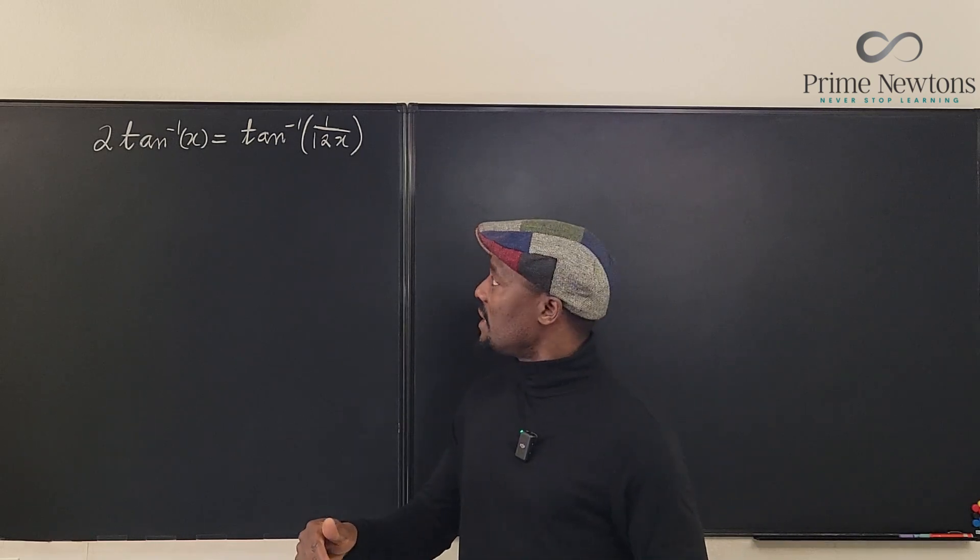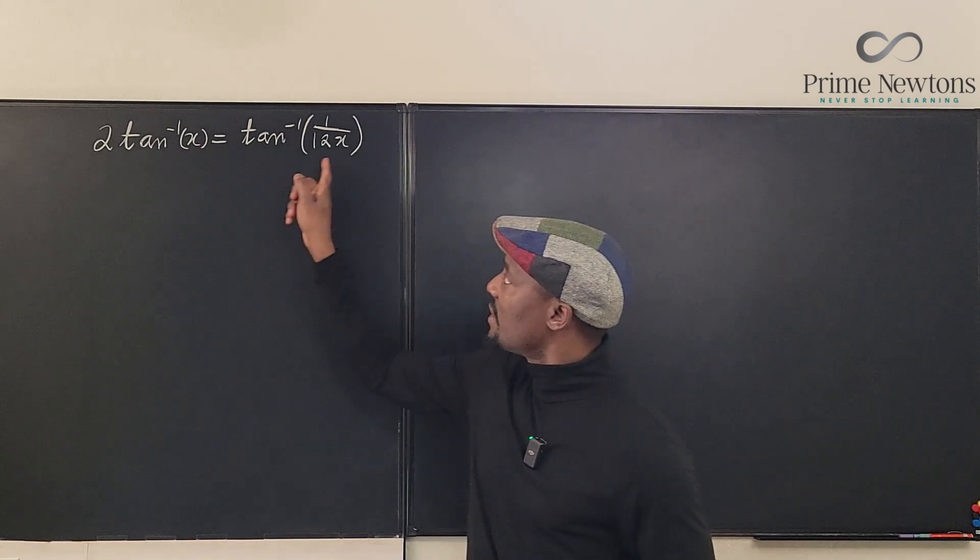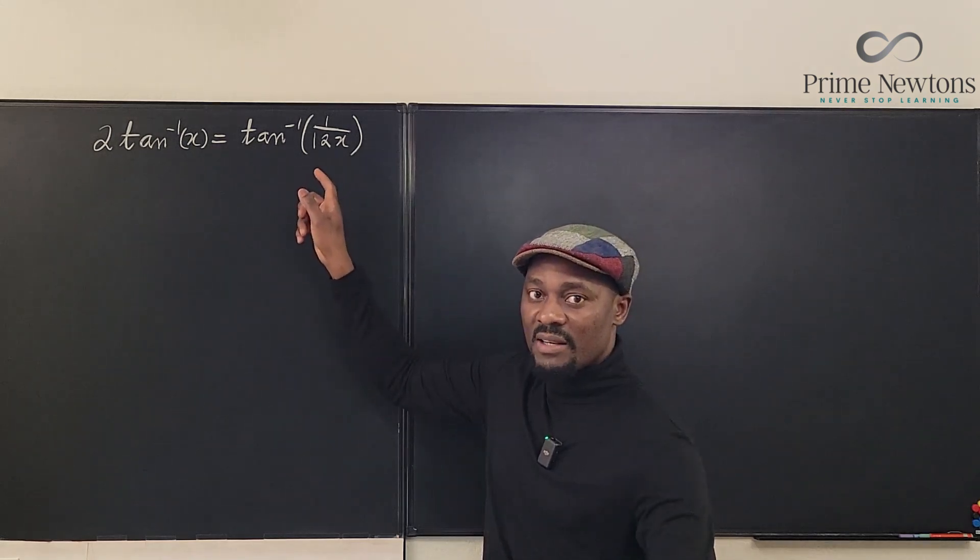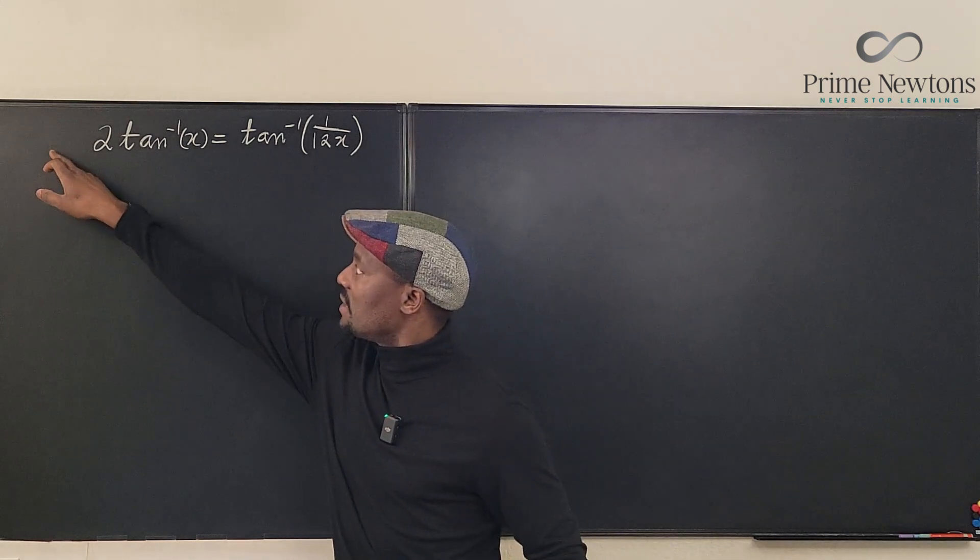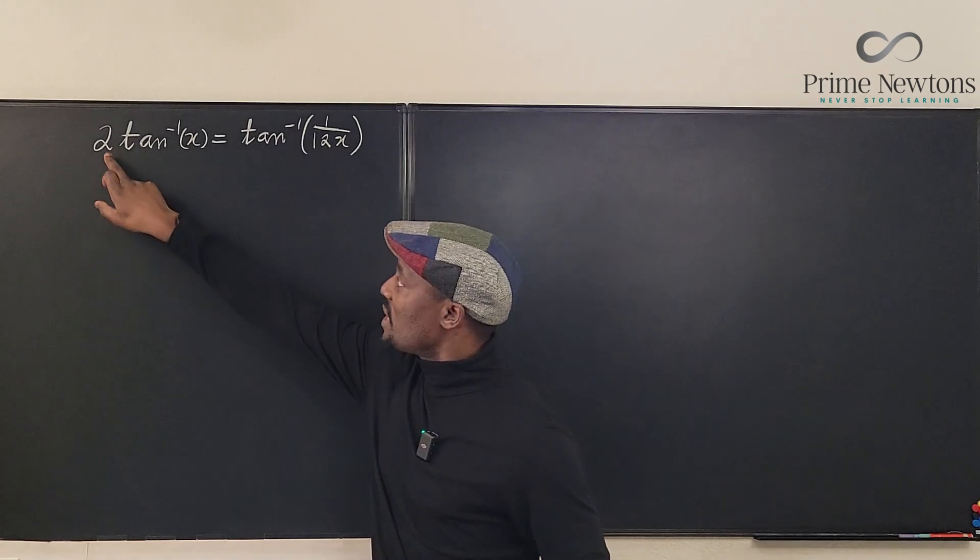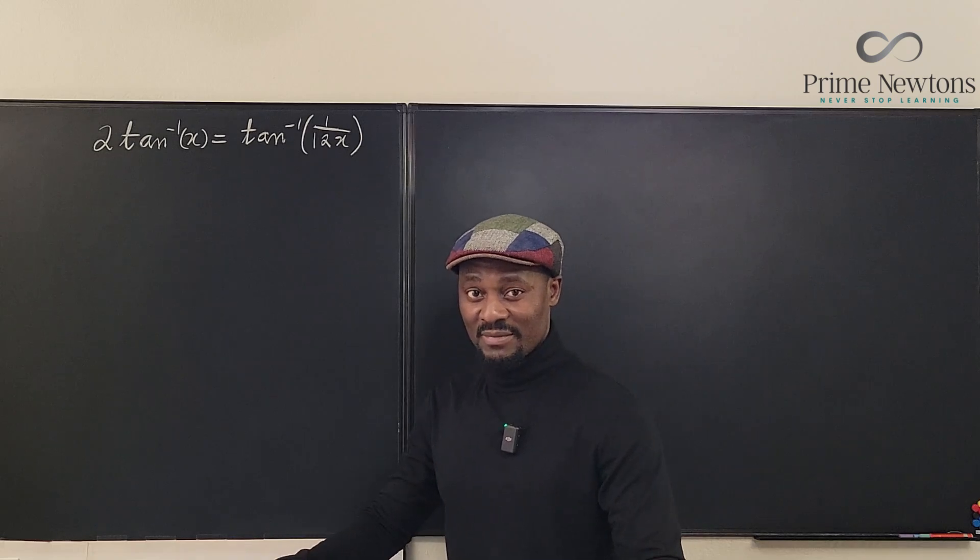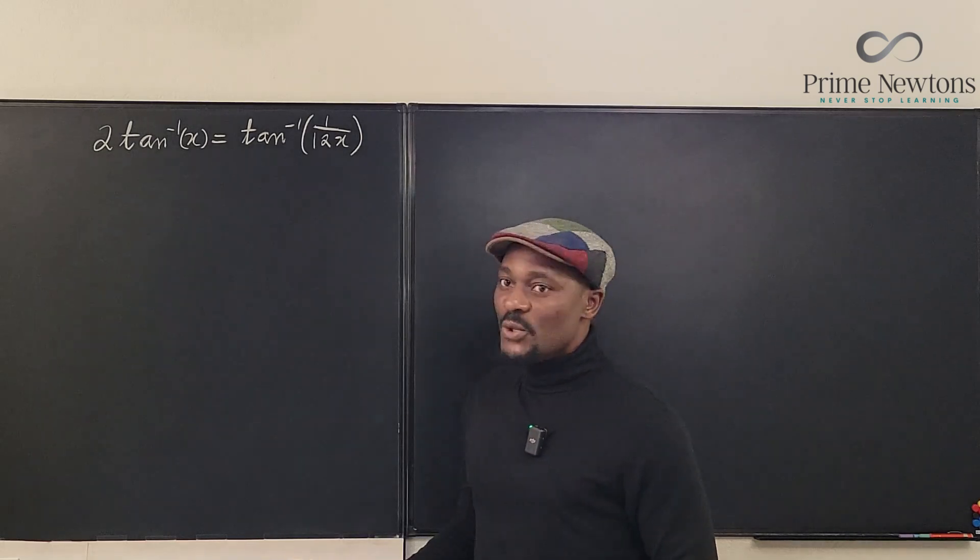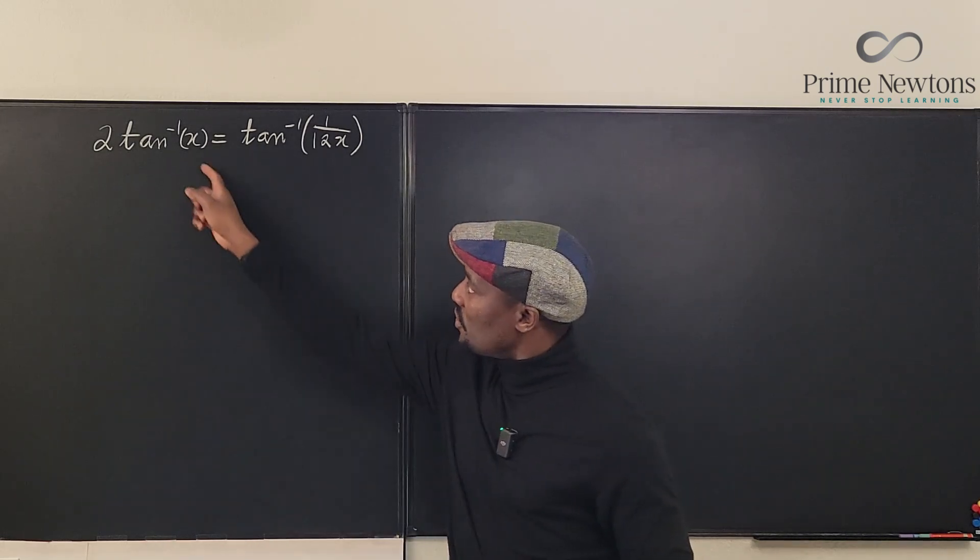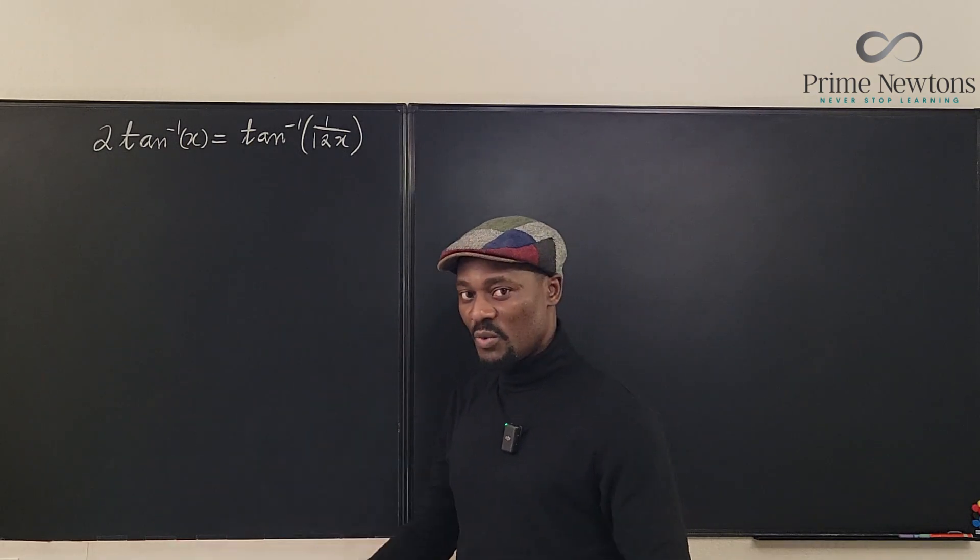Now think about it. Usually I would say take the tangent of both sides so you can free the guys in jail, but you cannot take the tangent of this because there's a two sitting here and this is not natural log where you can move this two inside. So it becomes a problem. Now we can do a u substitution for the arguments but it still does not change the problem that's outside. So what should we do?